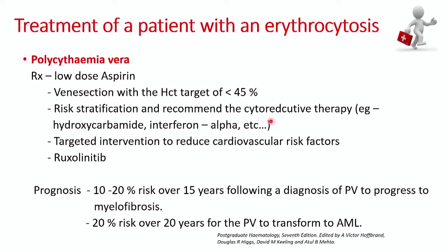For polycythemia vera, we give low-dose aspirin to prevent thrombosis and perform venesection targeting hematocrit below 45%. Cytoreductive therapy with hydroxycarbamide is the most commonly used drug. Other cytoreductive options depend on age and comorbidities. Cardiovascular risk factor modification is important to prevent thrombotic phenomena. Ruxolitinib can be used as second or third line if hydroxycarbamide or interferon is not tolerated.